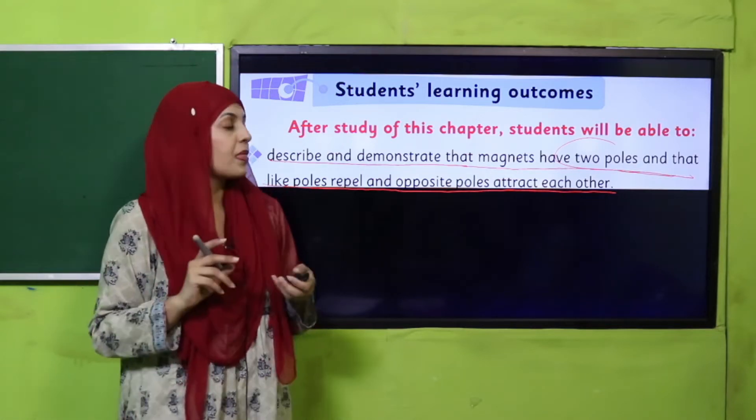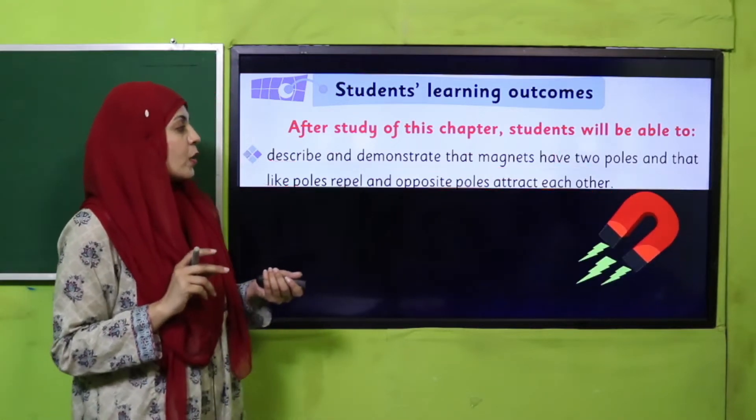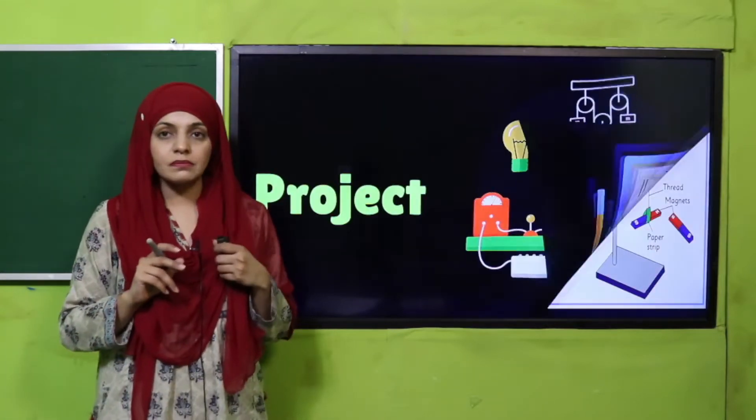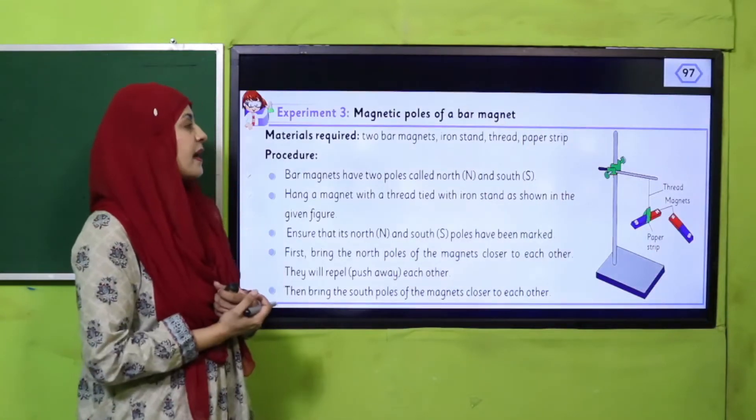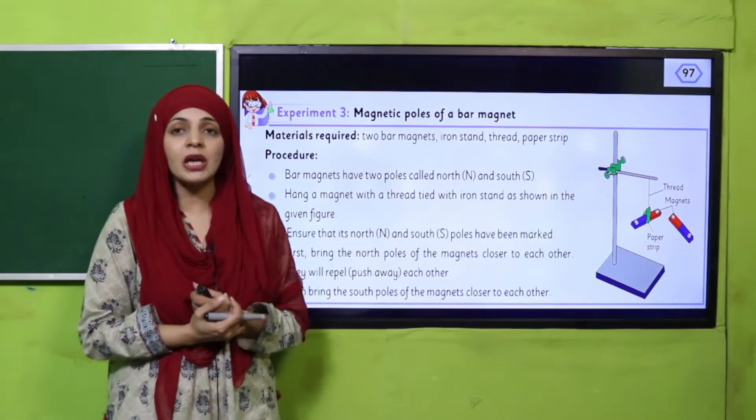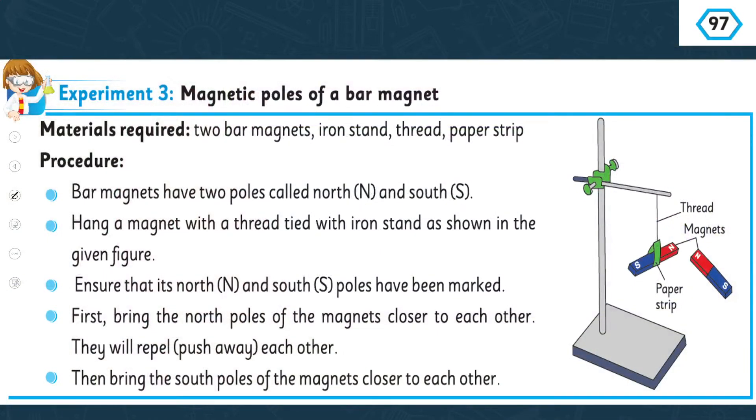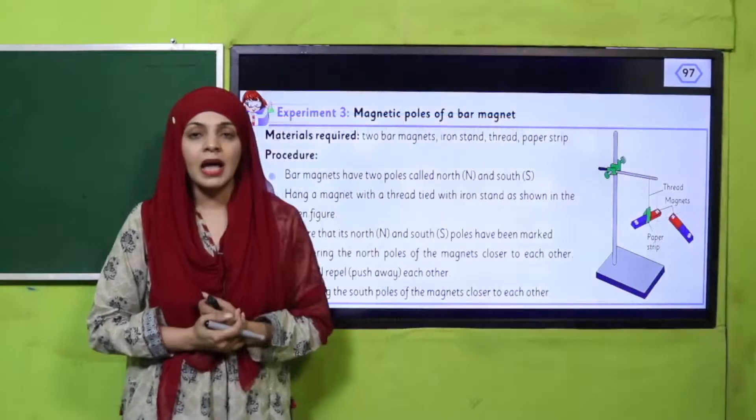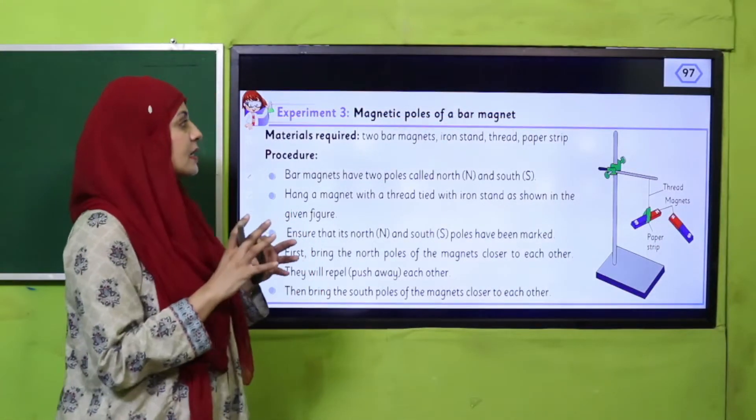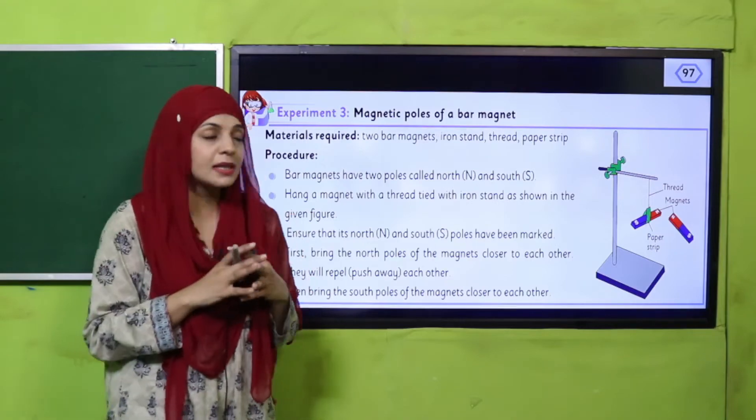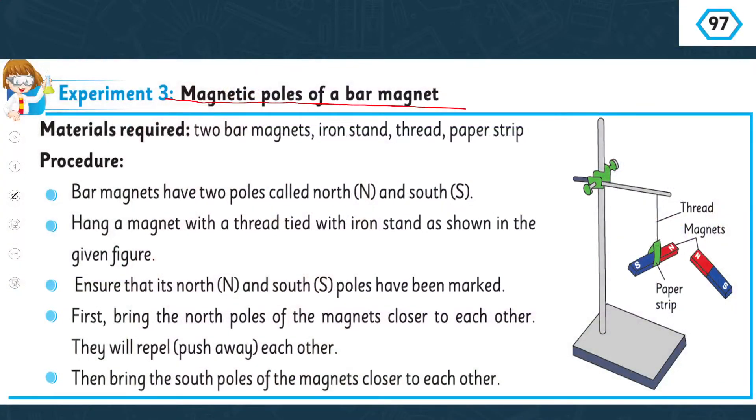Let's move forward to the experiment. This is experiment number three given on page 97. The purpose of this experiment is that students will know about the magnetic poles of a bar magnet. The material required is two bar magnets, iron stand, thread, and paper strip.